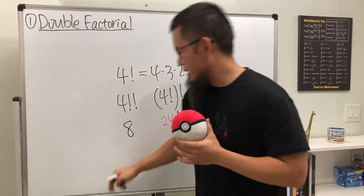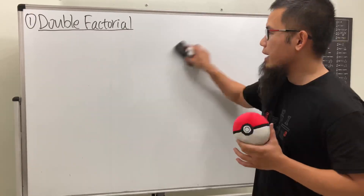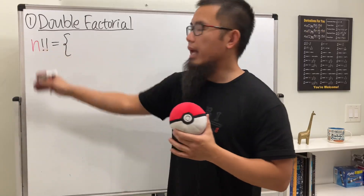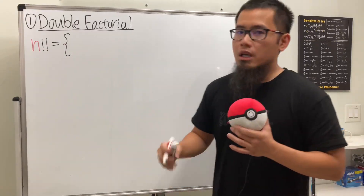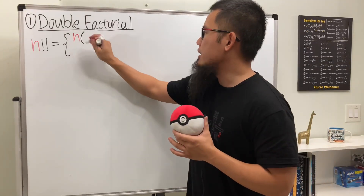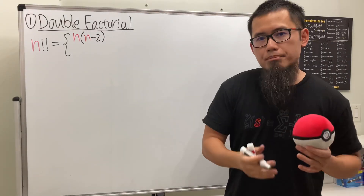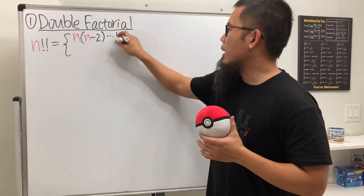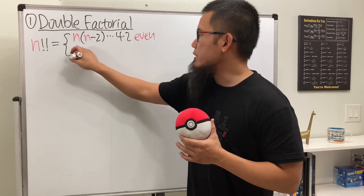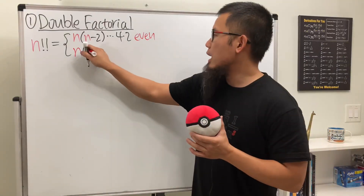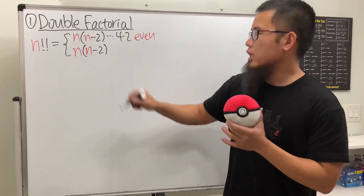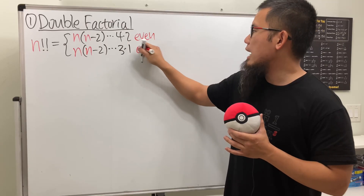For the double factorial notation: if we have n double factorial, it depends on what n is. If n is even, we start with n and multiply by the next even number, n minus two, then n minus four, and so on until we reach four and two. If n is odd, we still start with n and multiply by the next odd number, n minus two, continuing down until we reach three and one.